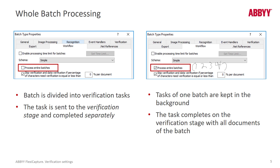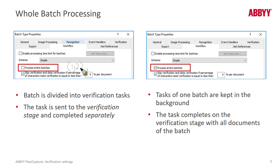But if you uncheck Process Entire Batches, that means if you've got a batch of four documents and the first two documents need verification while the last two are good to go, the batch will be split up. Images 1 and 2 will be held for verification, and images 3 and 4 will be sent directly to export. Similarly, if you want to route files to different queues, you can route the entire batch if Process Entire Batches is checked, or send only one document if it's unchecked.